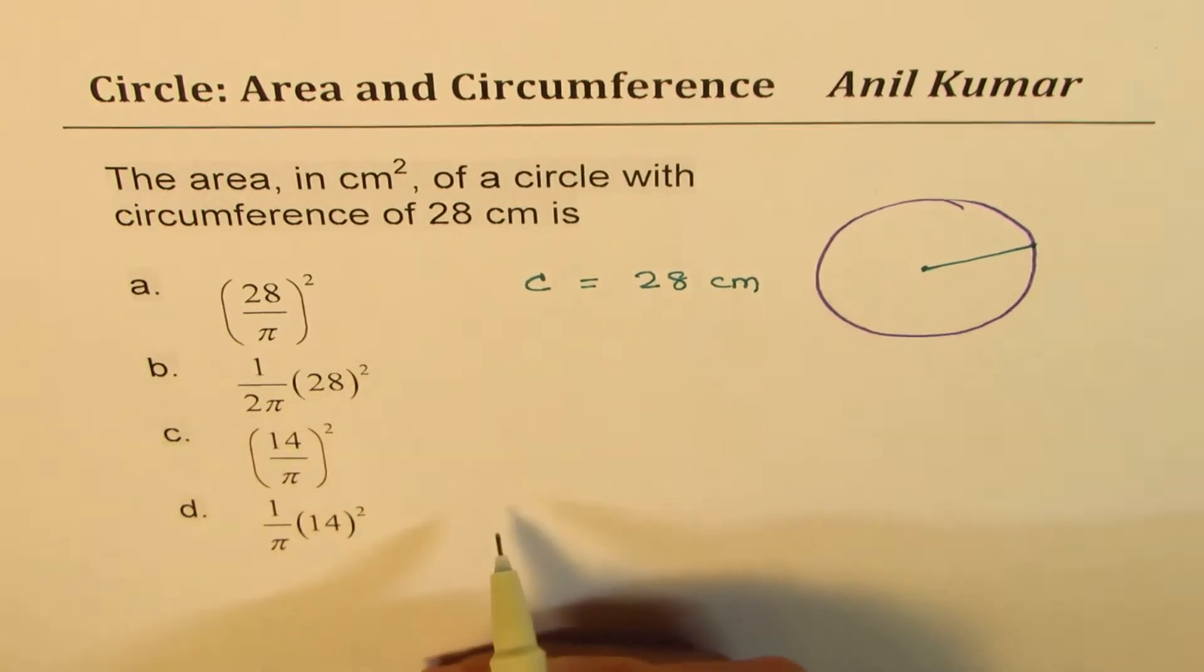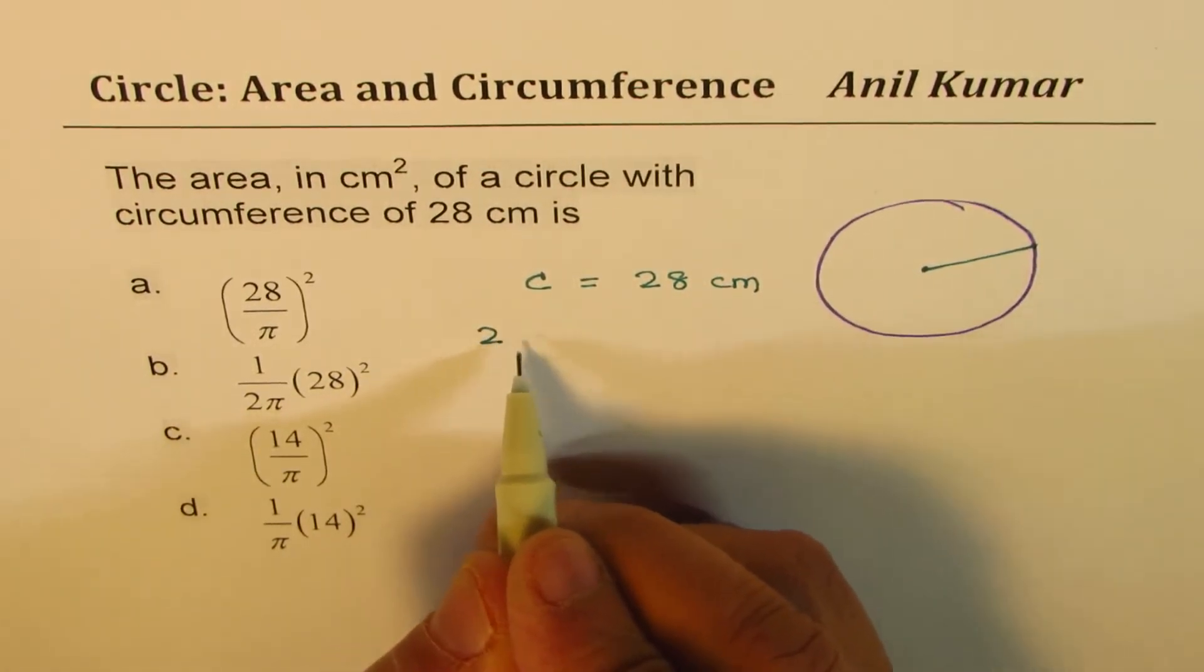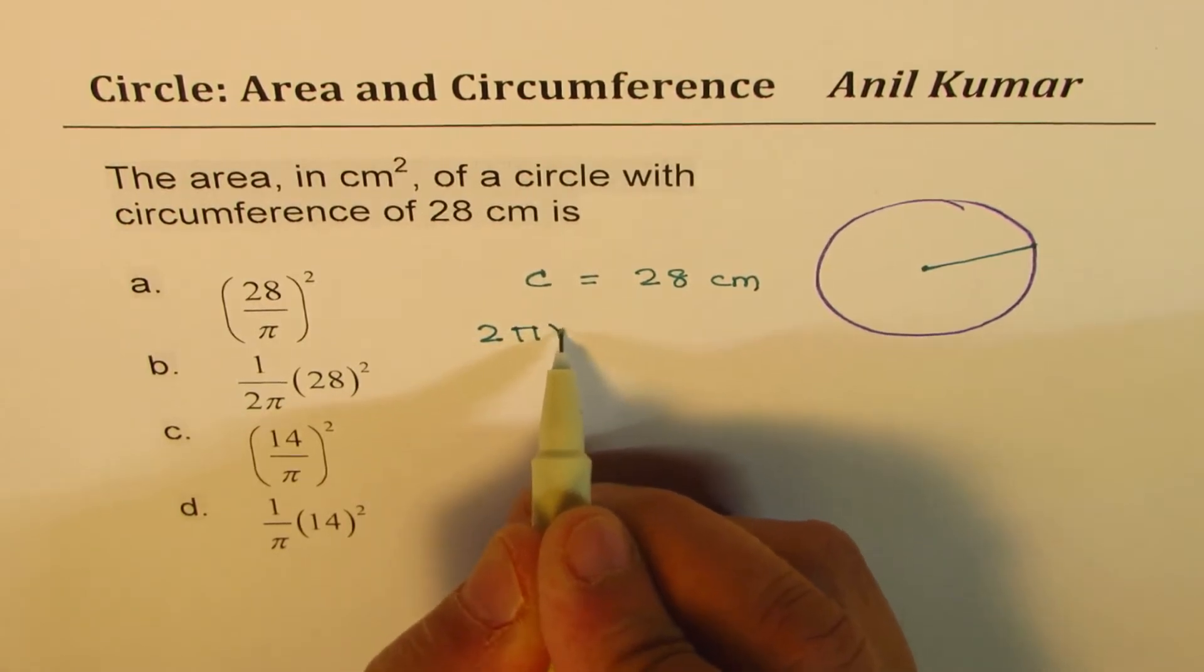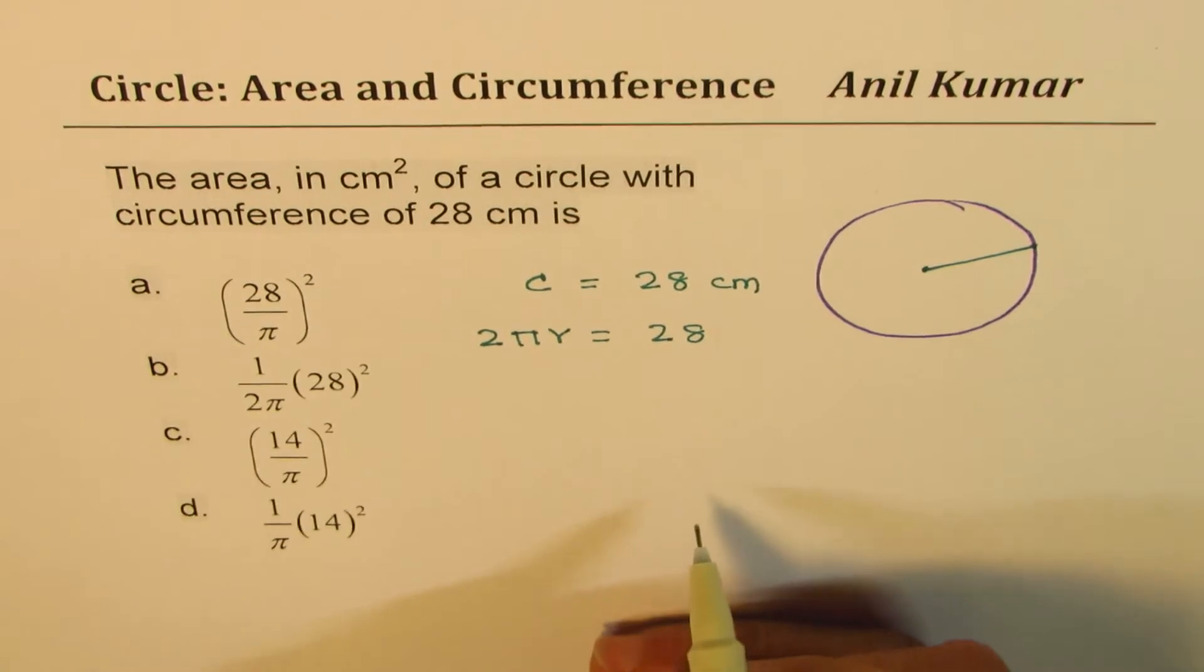Right. Now circumference formula is 2πr, so we could always write this as 2πr equals to 28. We'll include the units in the answer.